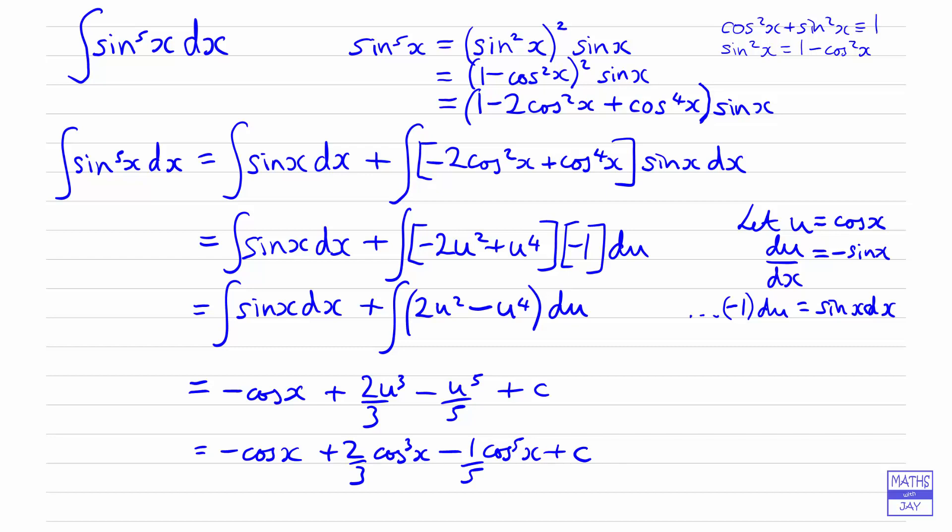So the trick there was realizing how we needed to rewrite sine x all to the power of 5 to start with. And of course realizing that we could use the identity cos squared plus sine squared is 1. Subtracting cos squared from both sides to get that sine squared is 1 minus cos squared. And then using a u substitution apart from the integral where we were just integrating sine x.